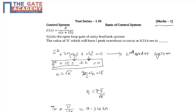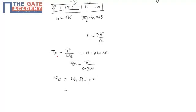We know that t_p, the time to peak overshoot, is given by π divided by ω_d, which equals 0.314 seconds as given in the question. From this equation we can obtain ω_d as π divided by 0.314.